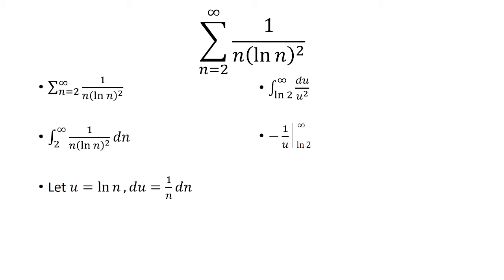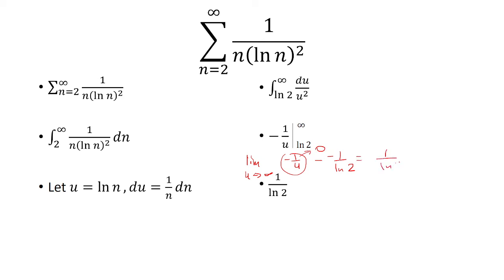Because this is an improper integral, we're going to use a limit here. The limit as u approaches infinity of negative 1 over u, and then minus negative 1 over ln of 2. This goes to 0. We have two negatives, makes it positive. So this is 1 over ln of 2. Since this is finite, the series converges by the integral test.